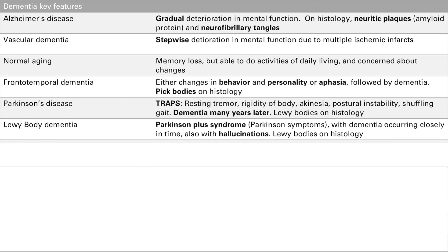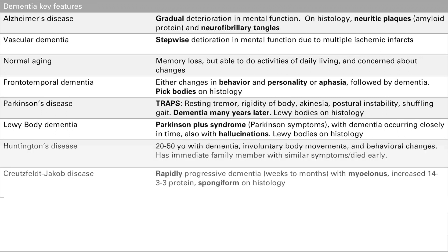Huntington's disease: key feature is the age — younger patient, 20 to 50 years old — with dementia, involuntary body movements, behavioral changes (aggressive or depressed), and family history of similar symptoms or early death. It's autosomal dominant. Creutzfeldt-Jakob disease: rapidly progressing dementia over weeks to months, myoclonus, 14-3-3 protein in CSF, and spongiform appearance on histology. Whenever you see spongiform in histology, think Creutzfeldt-Jakob disease.